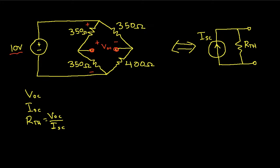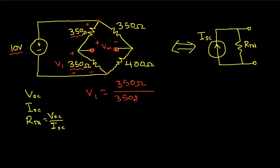With the circuit between the terminals open, this 350 ohm resistor and this 350 ohm resistor are in series, so I can use a voltage divider to get the voltage across this resistor. When I do that, let's call this V1. We have V1 equal to 350 ohms over 350 ohms times 10 volts, which works out to be 5 volts.